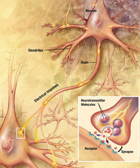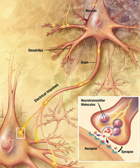Receptors on the opposite side of the synaptic gap bind neurotransmitter molecules and respond by opening nearby ion channels in the postsynaptic cell membrane, causing ions to rush in or out and changing the local transmembrane potential of the cell. The result is excitatory in the case of depolarizing currents, or inhibitory in the case of hyperpolarizing currents. Whether a synapse is excitatory or inhibitory depends on what types of ion channel conduct the postsynaptic current, which in turn is a function of the type of receptors and neurotransmitter employed at the synapse.